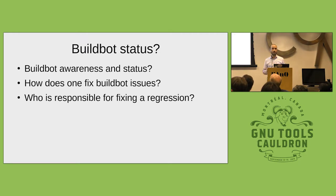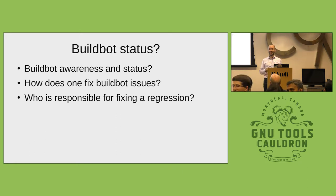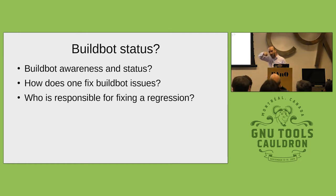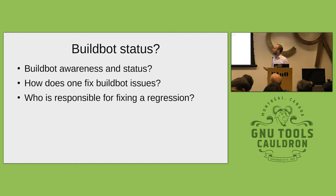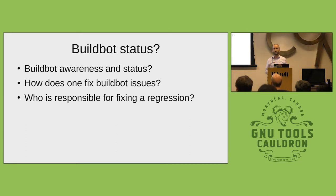What do we want to do about the build bots? My suggestion is to sign up people to be responsible for individual build bots by architecture — a primary build bot owner. Who is responsible for fixing a regression? Who is responsible for the build bot? Do we perceive value in the build bots? We all have to feel there's value, or we won't commit to it.